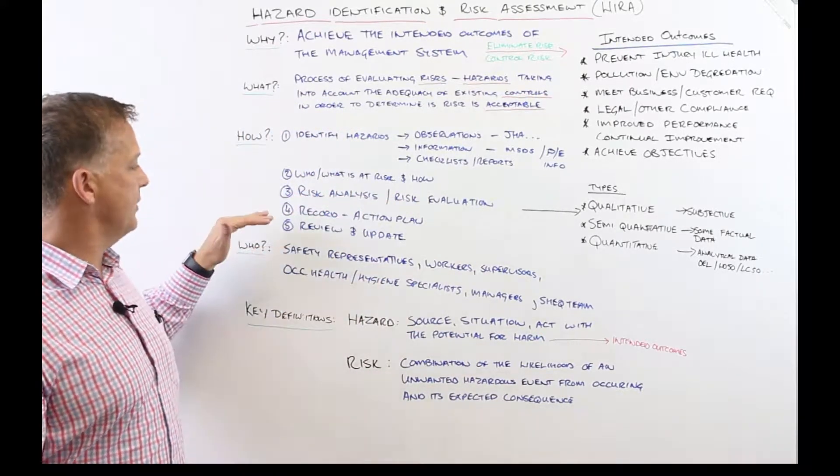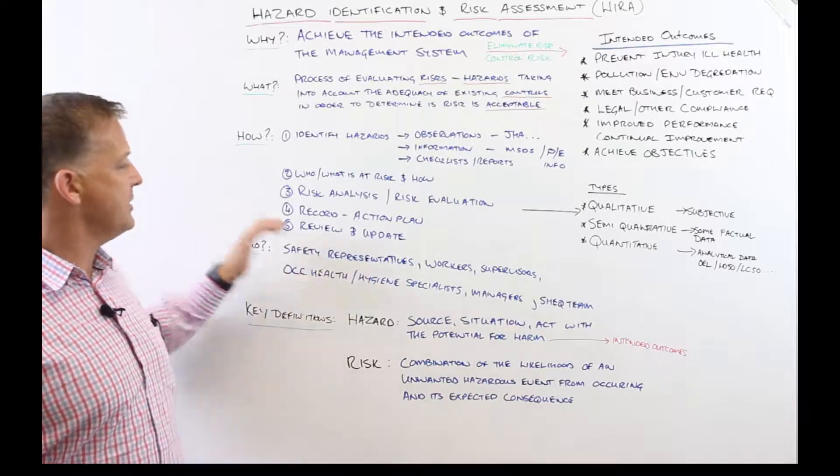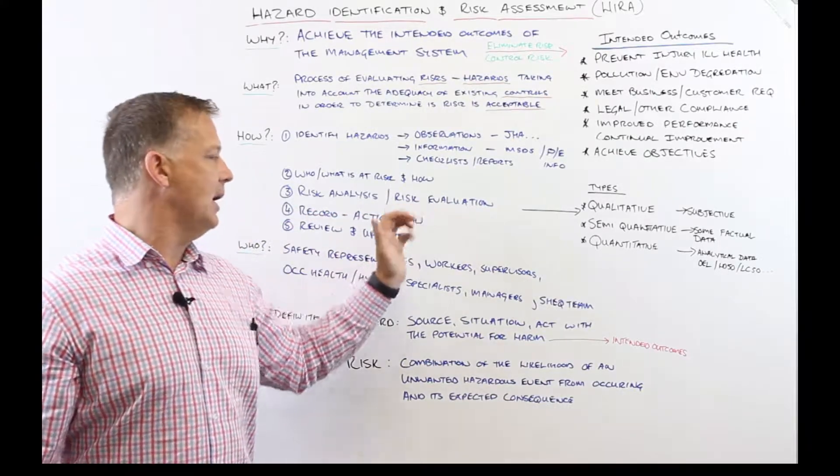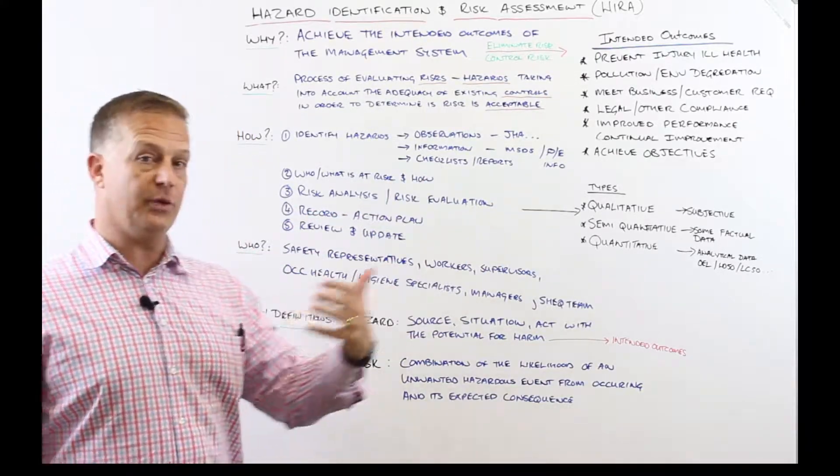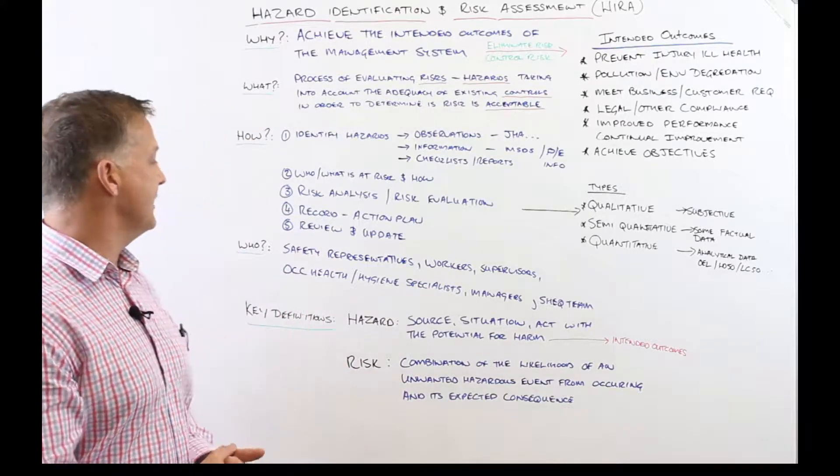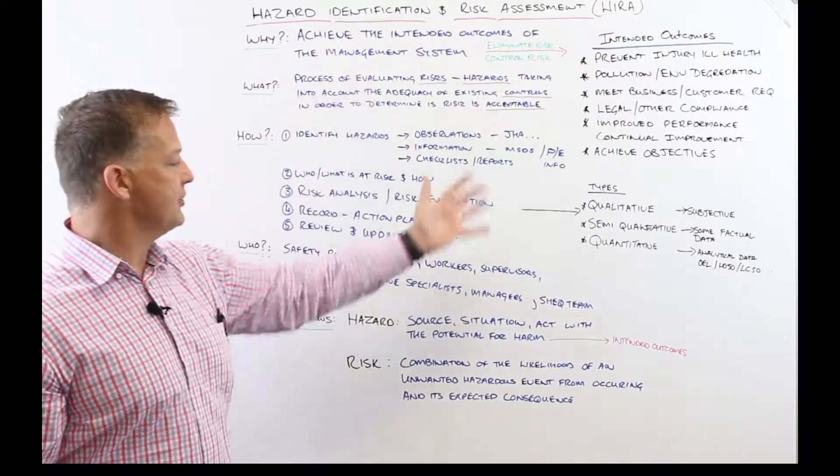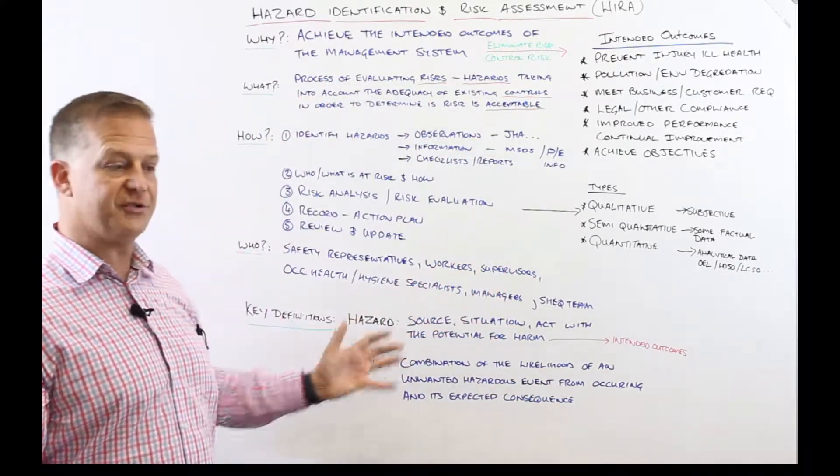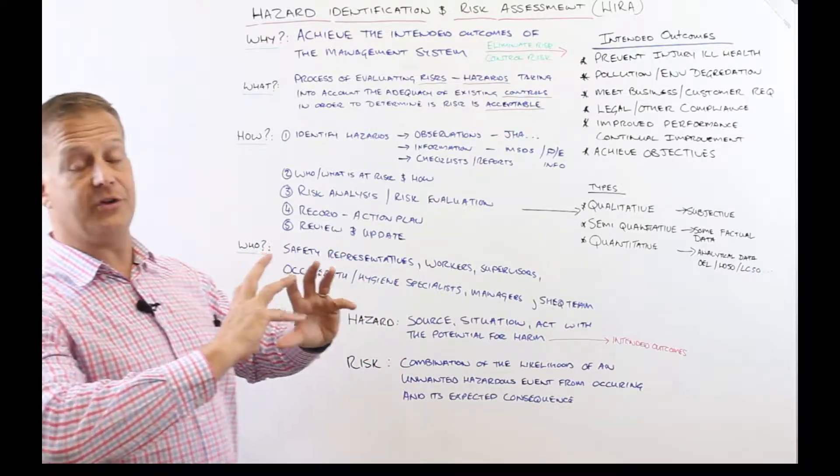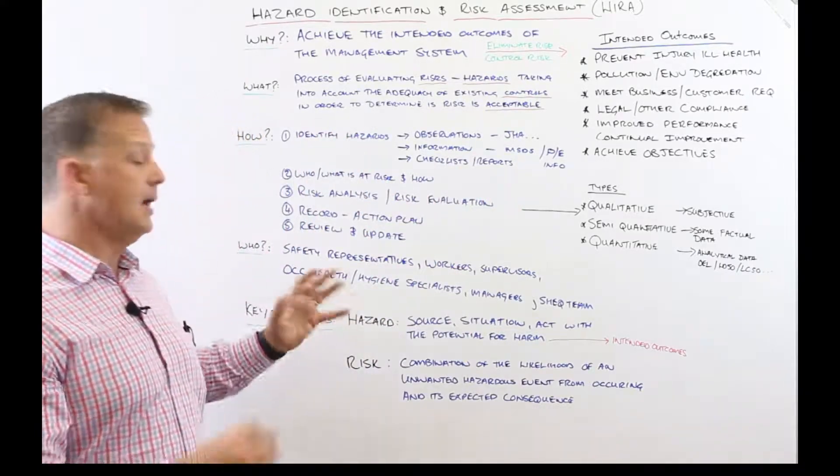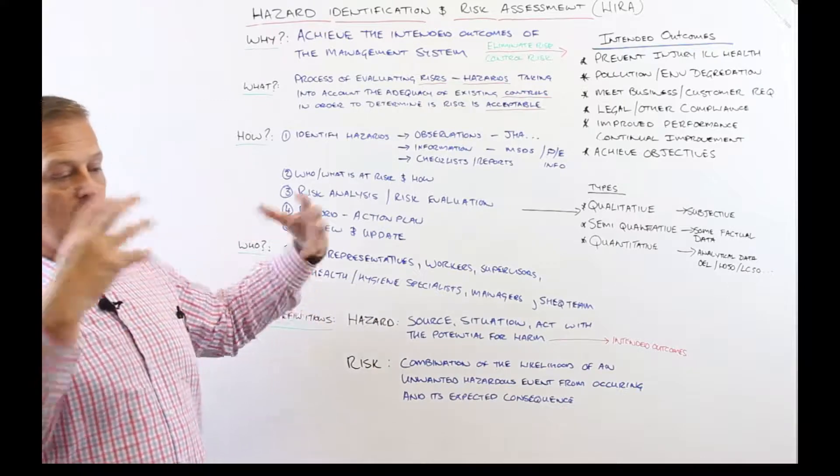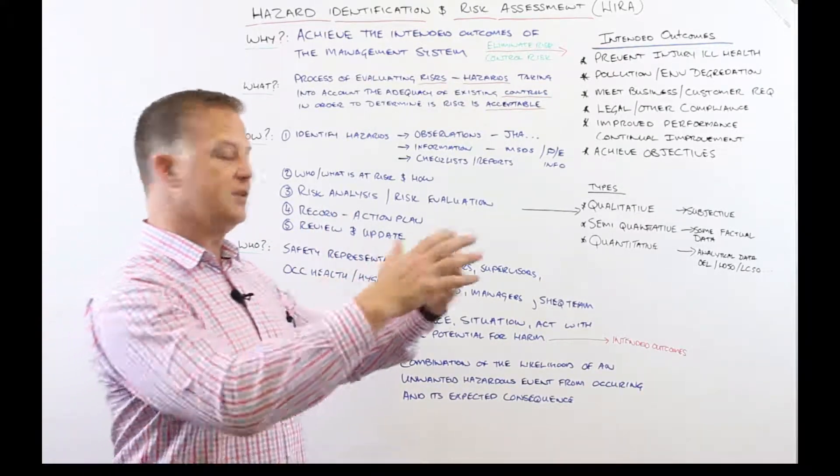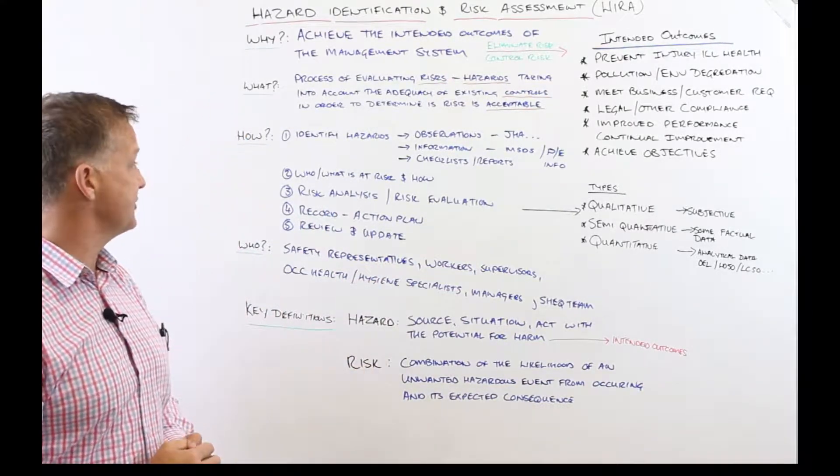So after we've done our risk assessment, we're then going into recording that. We're looking at an action plan as an output to risk evaluation. Are we going to transfer, treat, tolerate, etc.? And then also your risk assessment is a continual process. I don't believe that you can hit risk assessment nirvana because you establish a risk assessment, more information comes to light and you're continually improving and updating your risk assessment.